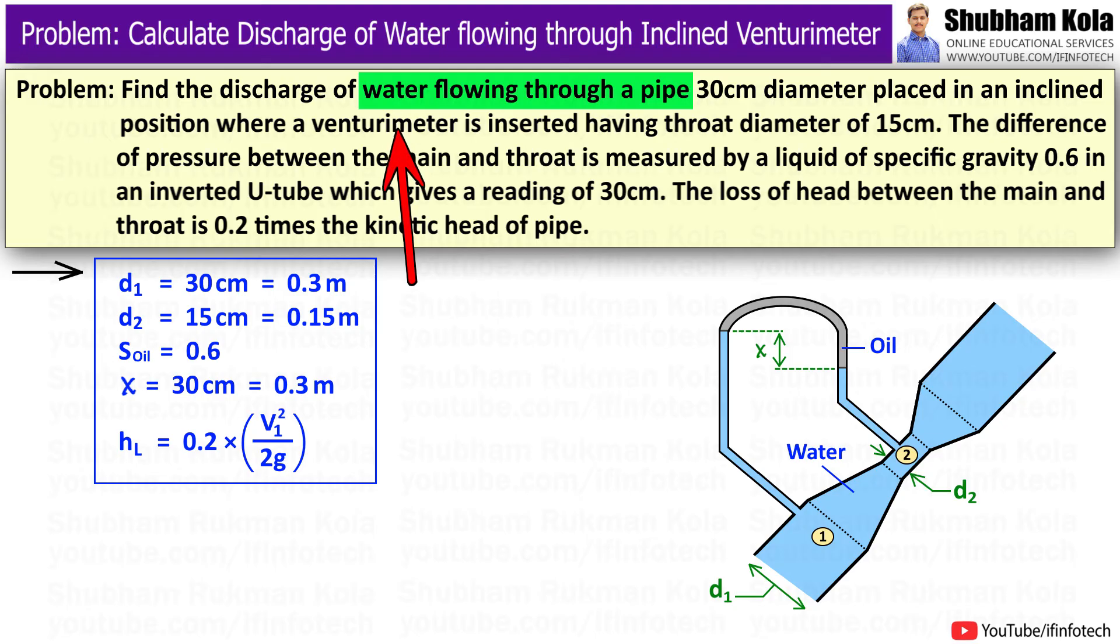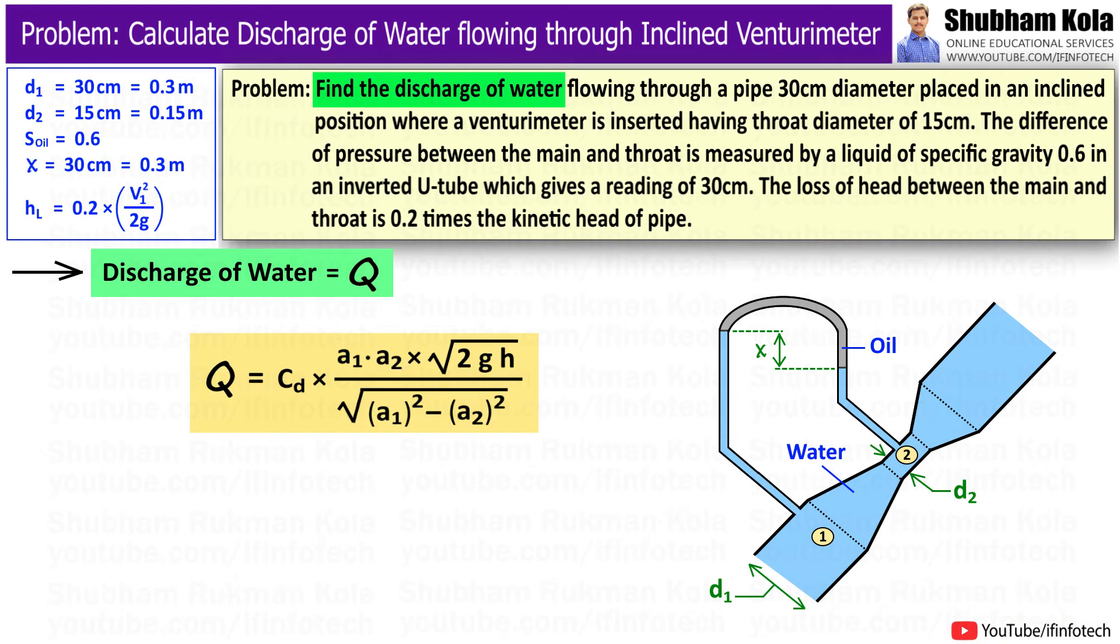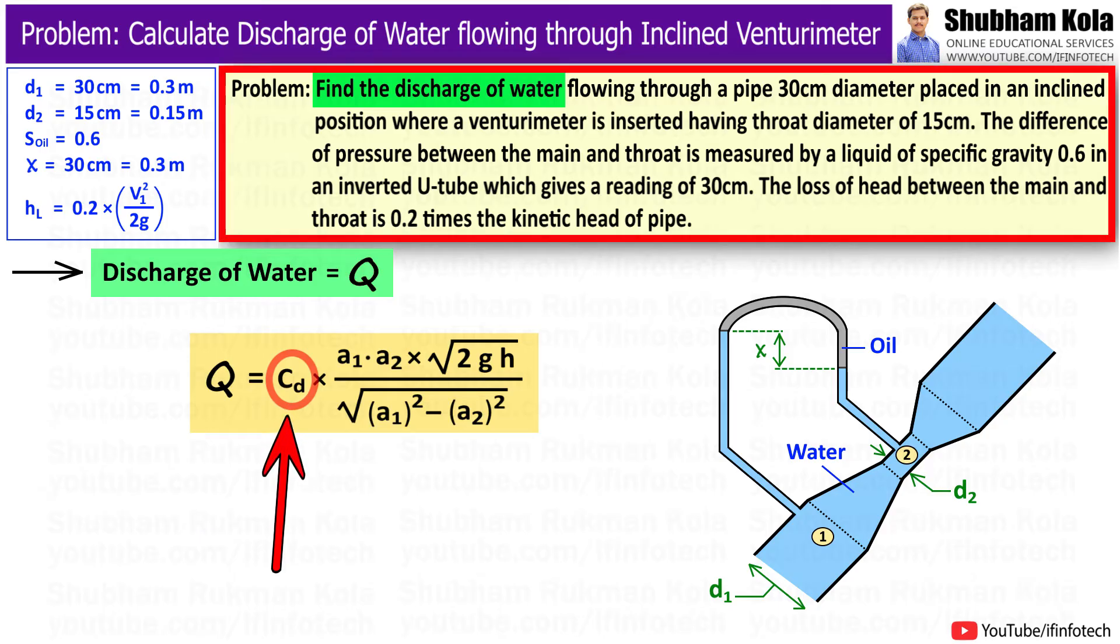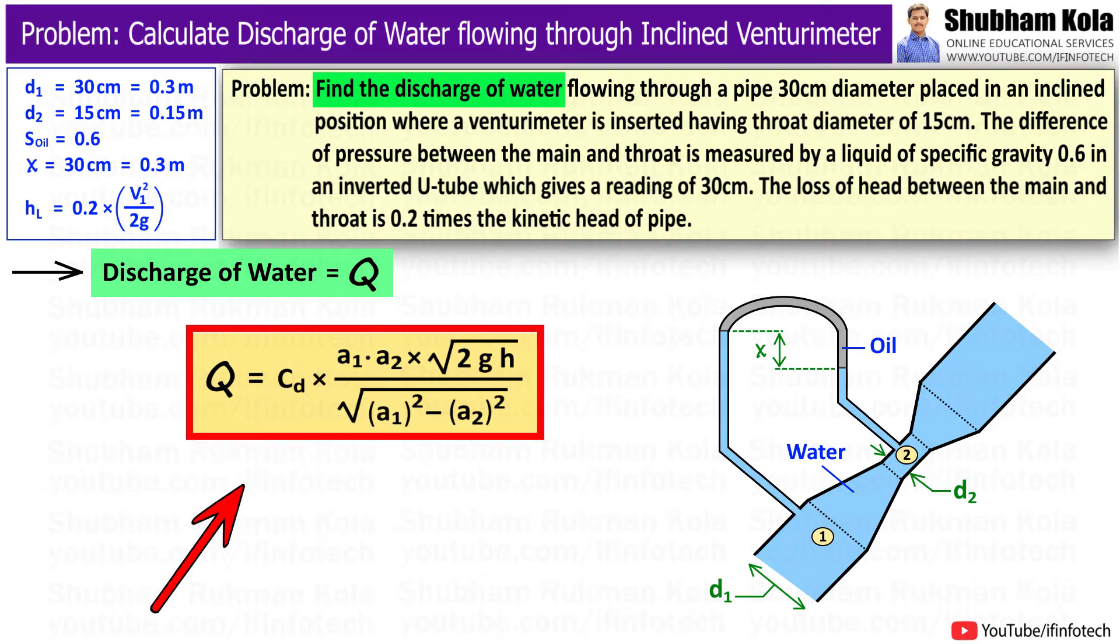In this problem, water is flowing inside the pipe and we want to find the discharge of water. We know the formula of discharge with coefficient of discharge cd, but the value of cd is not given in the problem, hence we cannot use this formula.